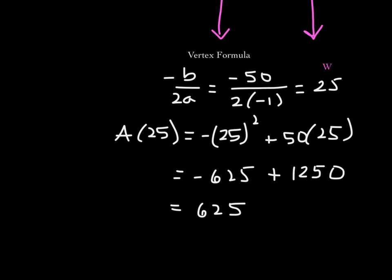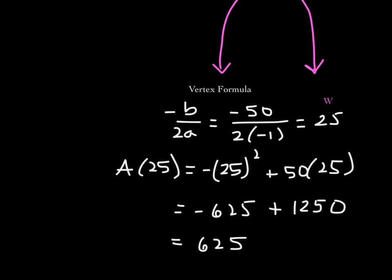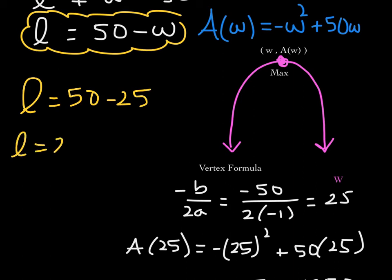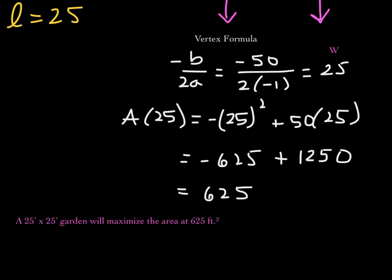Don't forget that we found the width, but we also need the length because they said find the dimensions. The length is 50 minus w, so the length is 50 minus 25, which is also 25 feet. So the width is 25 feet and the length is 25 feet — this rectangular garden is really a square. A 25-foot by 25-foot garden will maximize the area at 625 square feet. Be careful: when finding area, the units are always squared.